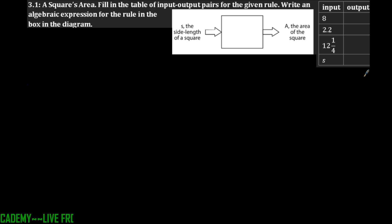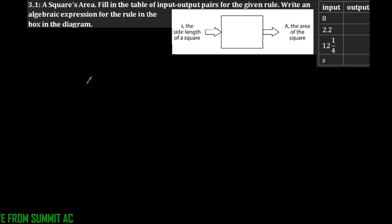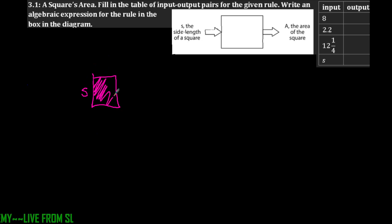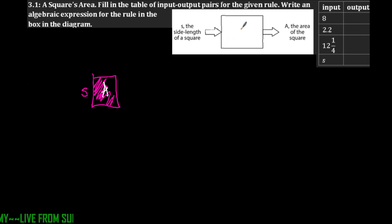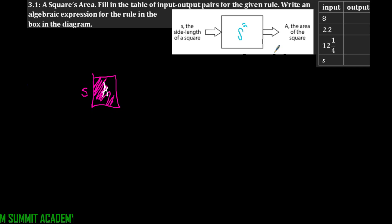For the first part it says a square's area — fill in the table of input/output pairs for the given rule, then write an algebraic expression for the rule in the box of the diagram. If you have a square with side length s, the area inside that square is going to be A. Since both sides are the same, we can say that's s squared. So s squared, or s times s, equals the area. That means eight squared is going to be 64.